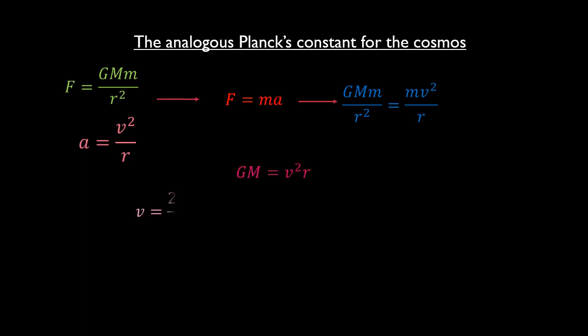Defining the velocity as before and subbing it in this expression yields the following yellow expression, which when rearranged can be written like so. This is Kepler's third law of planetary motion, which states that the square of the period of revolution of a planet is proportional to the cube of the planet's distance from its star.